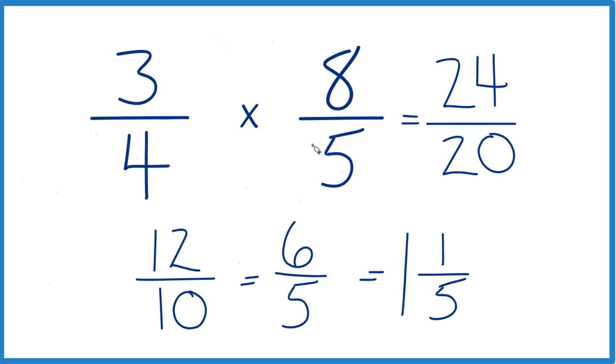So 3 fourths divided by 5 eighths, that gives us 1 and 1 fifth as a mixed number. That's it, this is Dr. B.